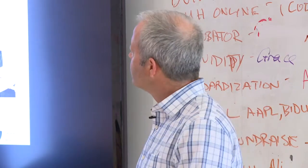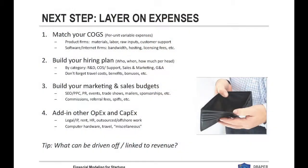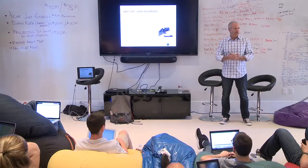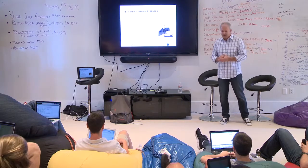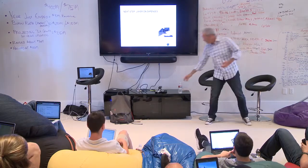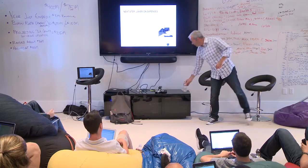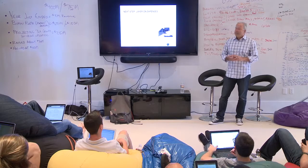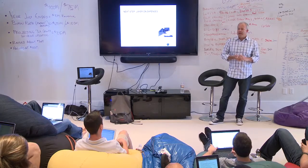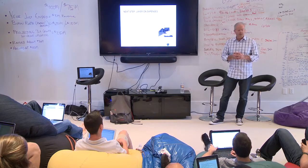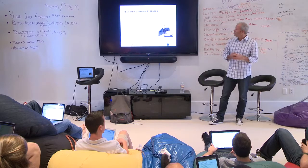I just walked you through a quick and dirty revenue build-up for two types of businesses. Once we build that, we focus on cost of goods sold. The way we think about cost of goods sold is: for every incremental user or customer, what are the expenses associated with that? It's a per-unit thing. For a water bottle, it's the plastic and the water. For an online video site, every user drives traffic and you have to pay for that bandwidth.